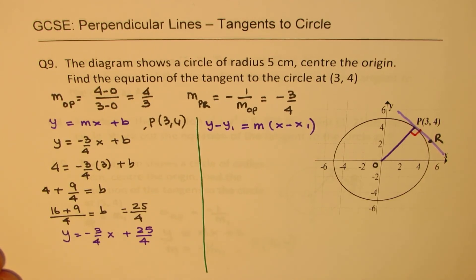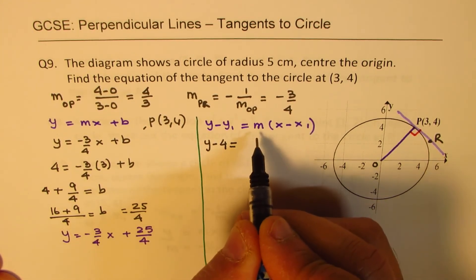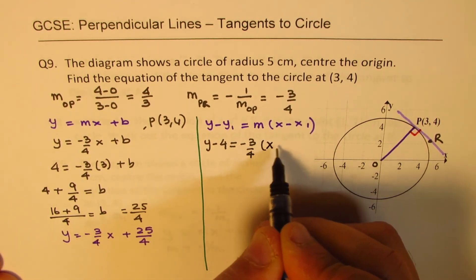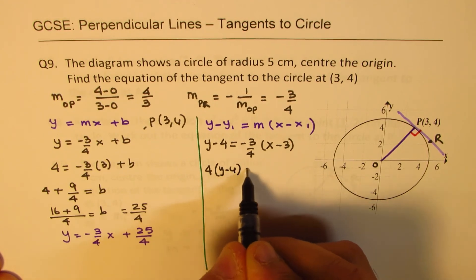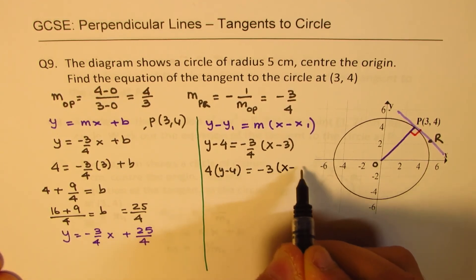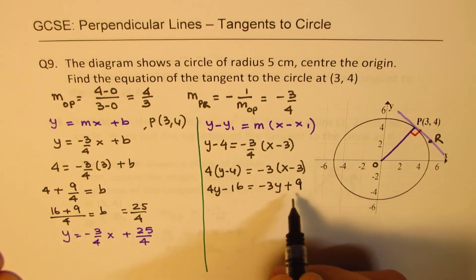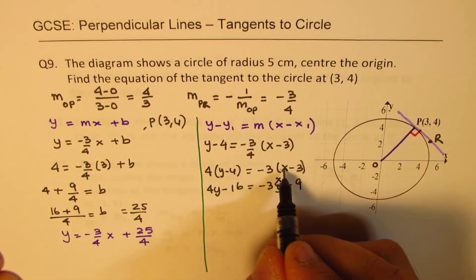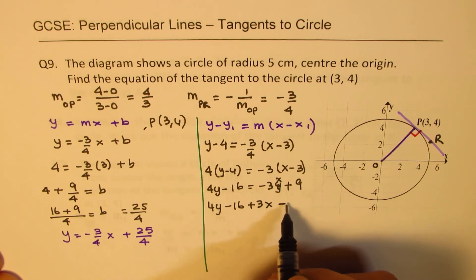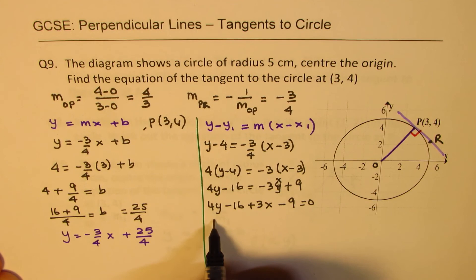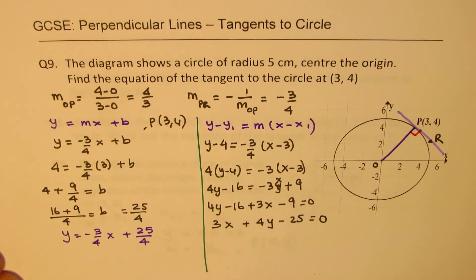Using Method 2, the point-slope form: y − 4 = (−3/4)(x − 3). Cross-multiplying: 4(y − 4) = −3(x − 3), which expands to 4y − 16 = −3x + 9. Bringing all terms together: 3x + 4y − 25 = 0. Always write the x term first. This is the equation of the tangent in standard form.